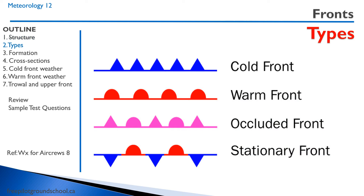We can have four main types of fronts. We can have a cold front denoted by blue triangles, a warm front denoted by red semi-circles, an occluded front denoted by circles and triangles on the same side — often they're magenta — and a stationary front which alternates between red semi-circles and blue triangles on opposite sides.